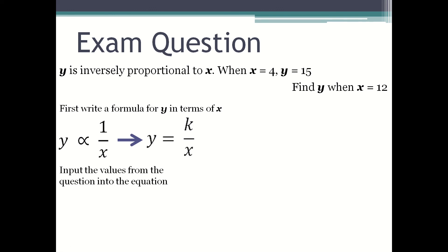Input the values from the question into the equation. So 15 equals k over 4. Rearrange the formula to have k on its own. So k equals 15 times 4, so k is equal to 60.